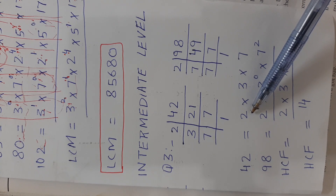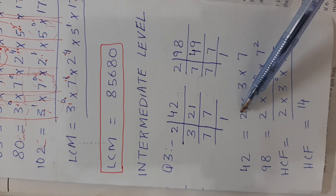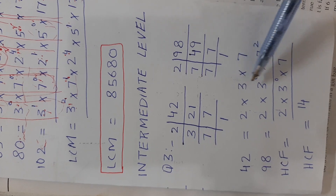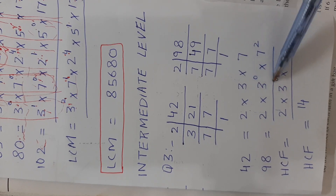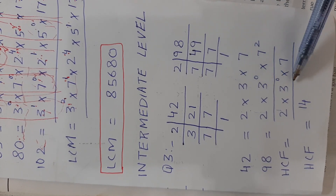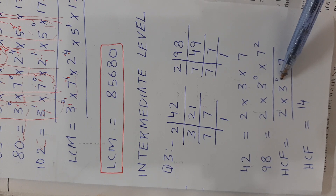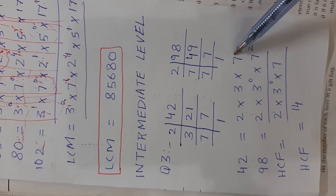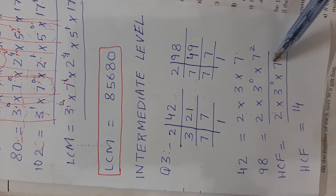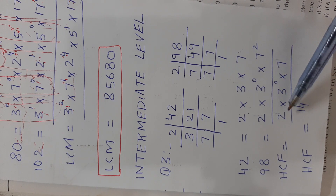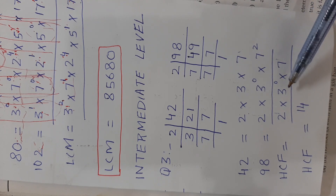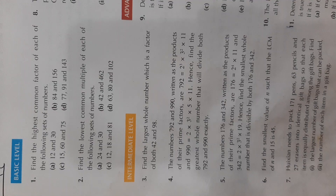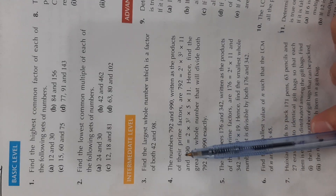We have 2¹ and 2¹, so take out 2¹. Then we have 3¹ and 3⁰, so the least power is 3⁰. From the column of sevens, the least power is 7¹, so take out 7¹. Now 2 × 7 = 14, and since 3⁰ = 1, the answer is 14.